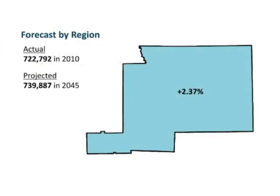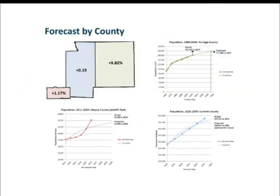Looking at the overall forecast for the entire AMATS region, the actual census count in 2010 was around 723,000 people. Projecting the count into 2045 is roughly 17,000 people more, for about a 2.4% increase overall. Breaking that down by county, I want to point out that when you look at the graph for each county, the scales are a little bit different — both the X and Y axes — so be careful when comparing the curves, as there are some subtle things to remember.